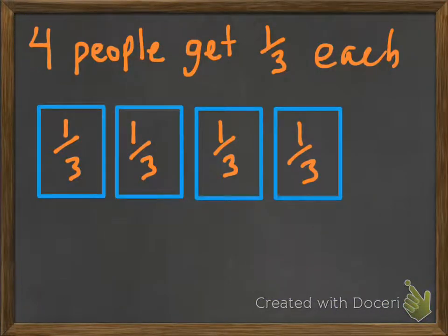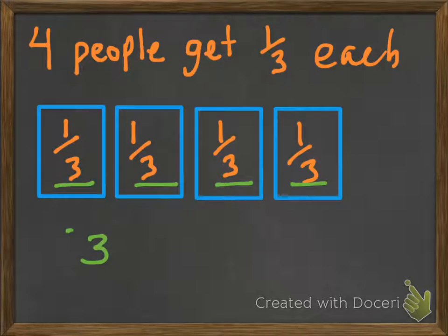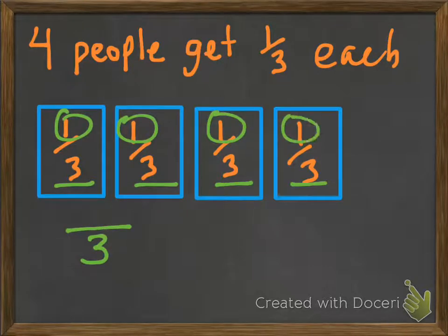Well, here we are. 4 people get 1 third each. So we have 1 third, 1 third, 1 third, 1 third. And so we can just add them up since the denominator is the same — that stays the same. And we have 1, 2, 3, 4 thirds. And that's what we would need. We would need 4 thirds.